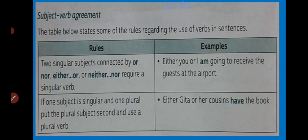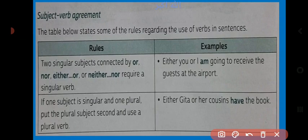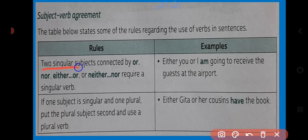Without wasting your time, ab hum baat karein ge rules pe — subject-verb agreements. The tables below state some of the rules regarding the use of verbs in sentences. Here are some rules on subject-verb agreement: when we are going to use verbs in sentences, there are some rules. First column: here are rules, here are examples.